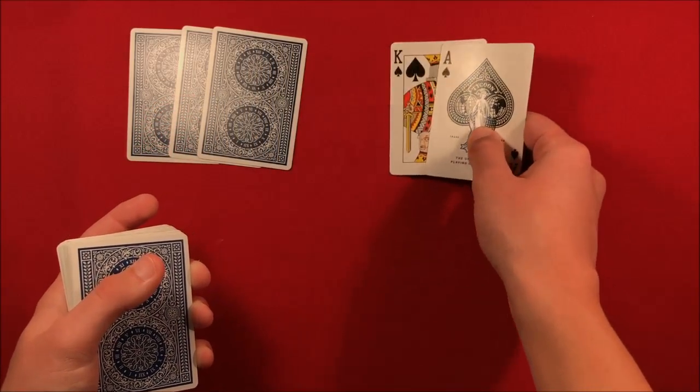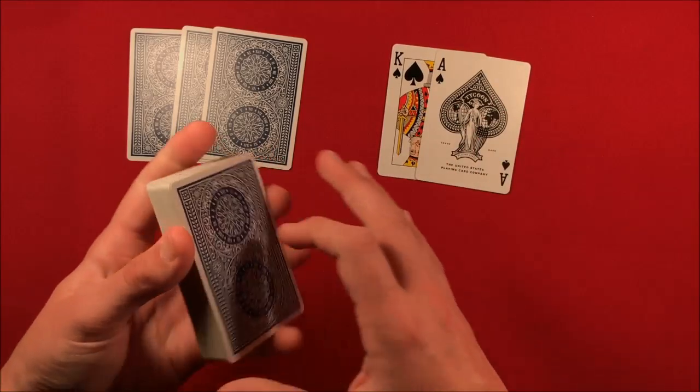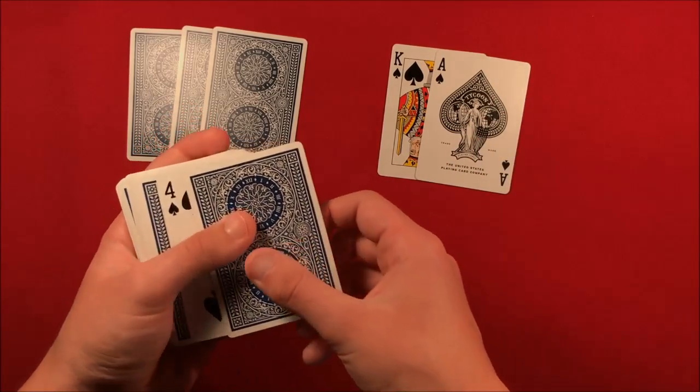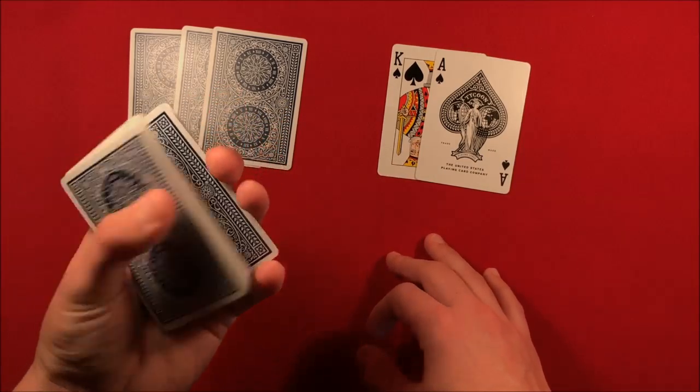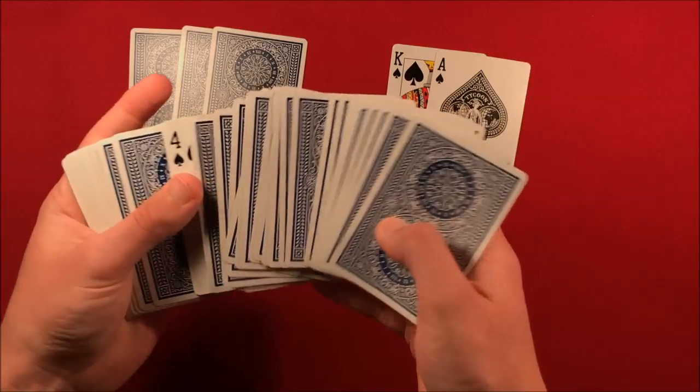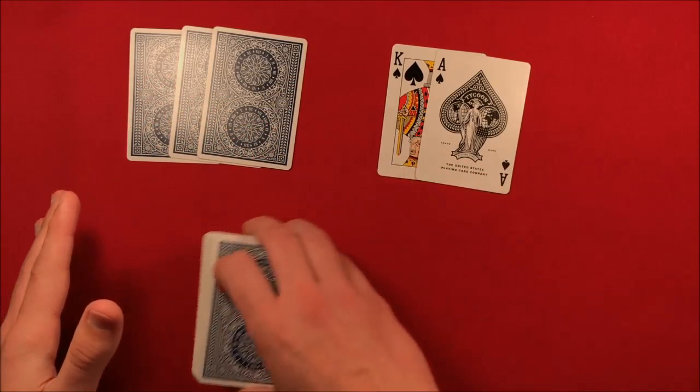What you could do is you could do a one-handed cut to actually lose this face up four. If you don't want this near the top of the deck, you could do like a one-handed cut, lose this into the middle of the deck somewhere, and now you're kind of clean at this point.